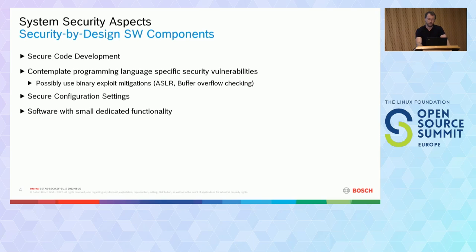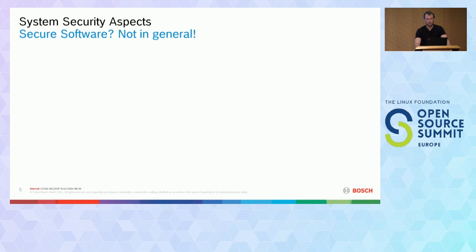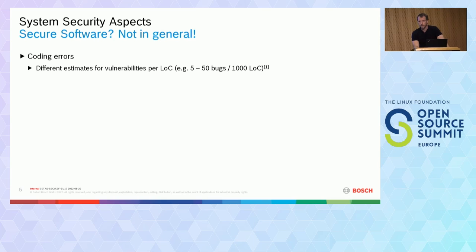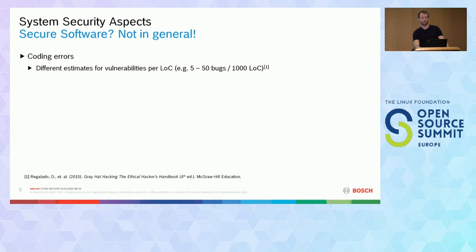Another thing getting more into the hardening section is secure configuration settings. We want to have software with small dedicated functionality. Even if we have a secure architecture and secure components, having truly secure components is not generally guaranteed. There will always be coding errors and new threat technologies arising. Different estimates exist for vulnerabilities in code, obviously depending on code complexity and language, but every code base will have some.